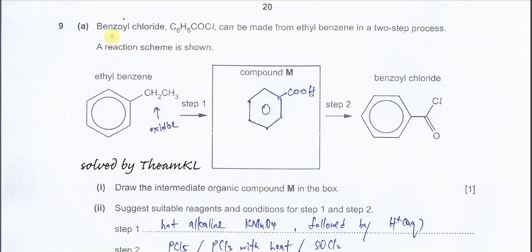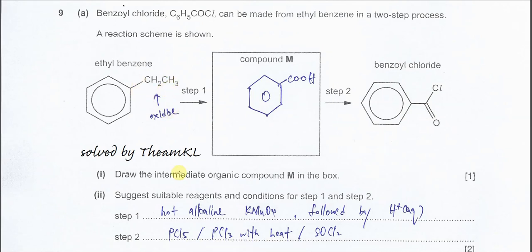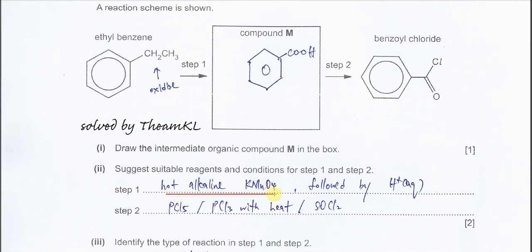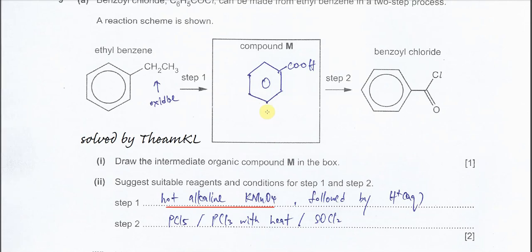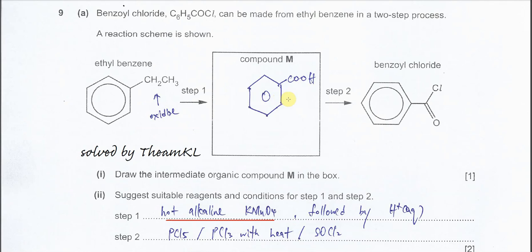Question 9a: benzoyl chloride can be made from ethyl benzene in a two-step process as shown in the scheme. Starting from ethyl benzene to form benzoyl chloride, the first step involves oxidation — the ethyl group needs to be oxidized to COOH. To oxidize this ethyl group, we use hot alkaline KMnO4, followed by acid solution for acidification. This will form benzoic acid.